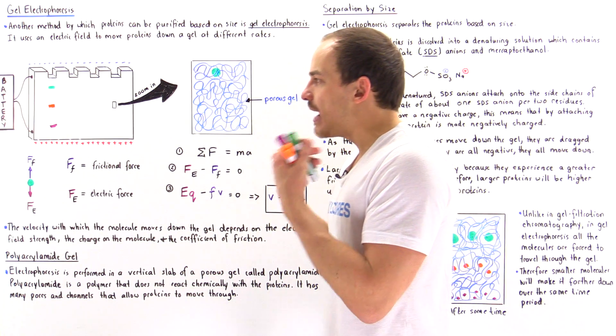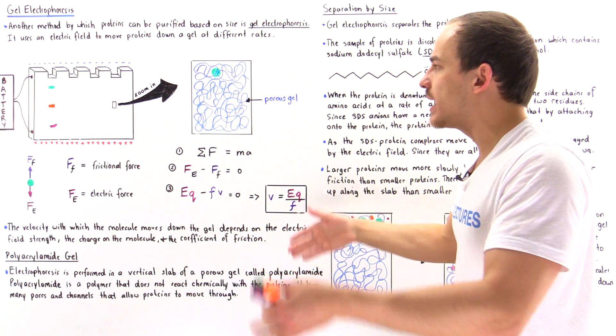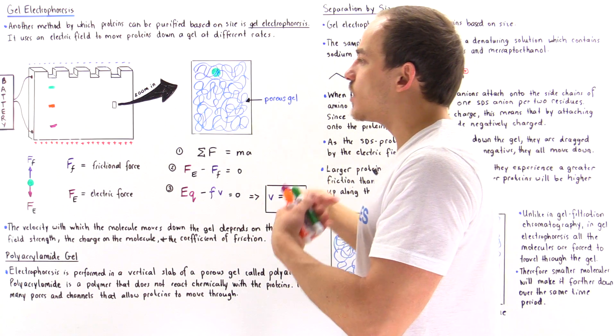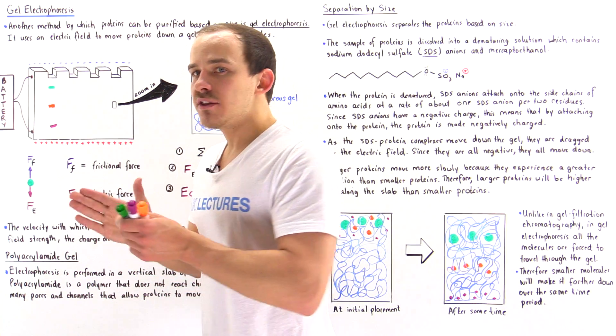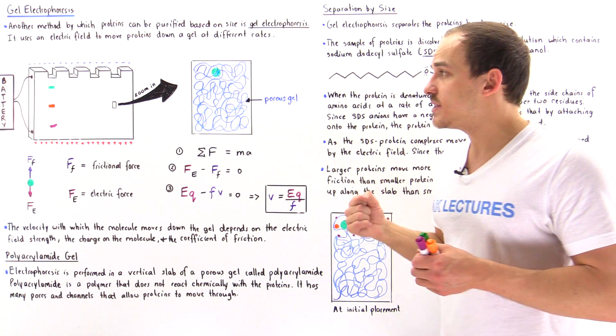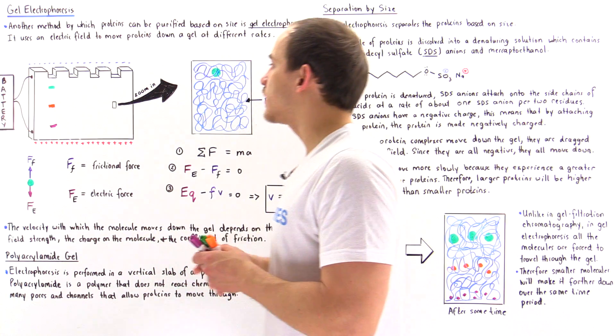And although each and every individual protein will follow its own unique pathway through these channels and pores, their rate will be exactly the same. So for any given protein that is of equal size, because their rate will be the same, they will end up at the same exact location along our gel.